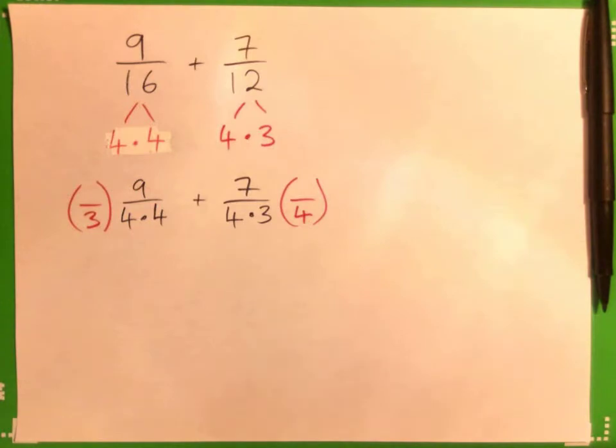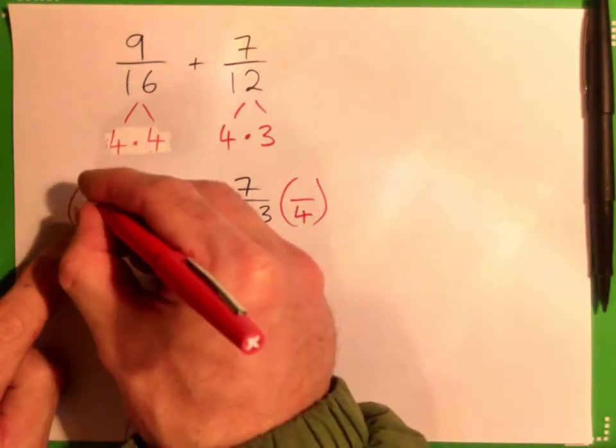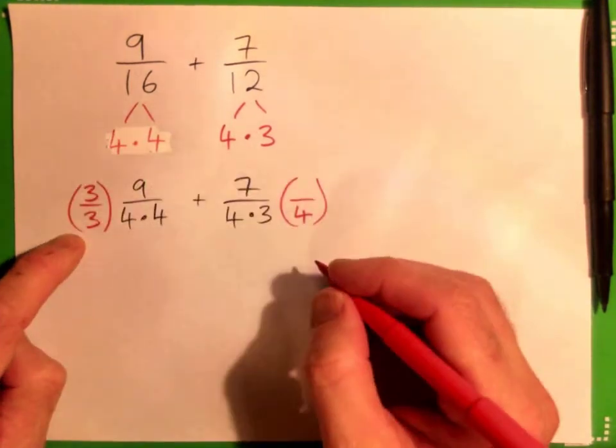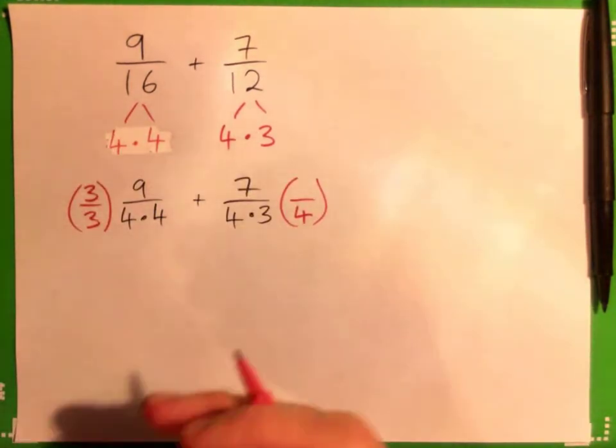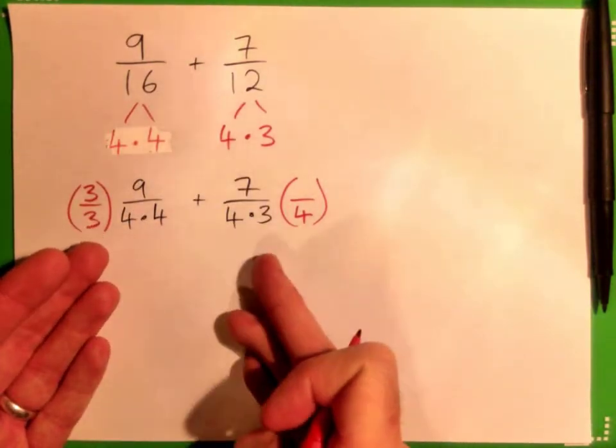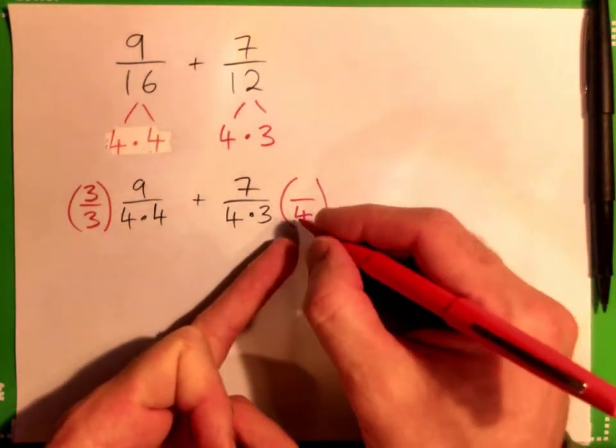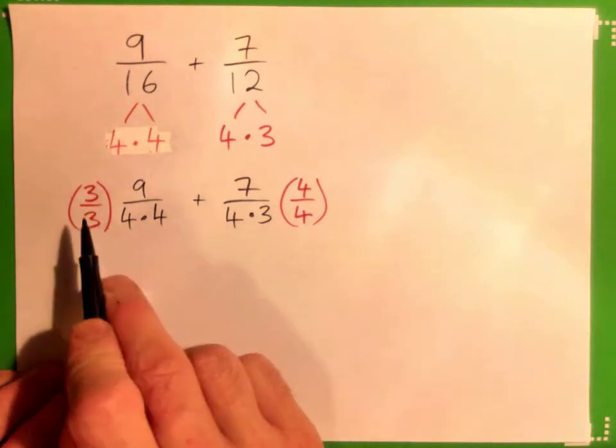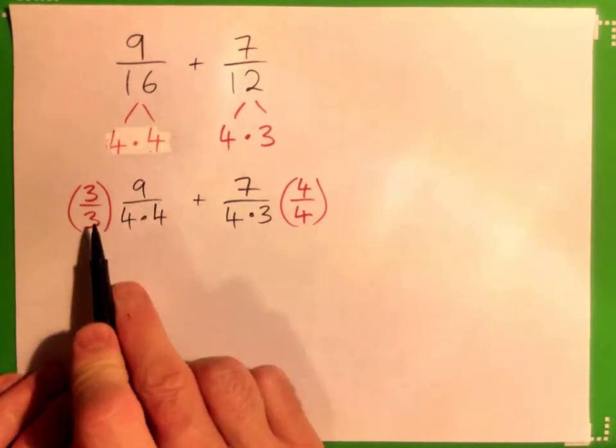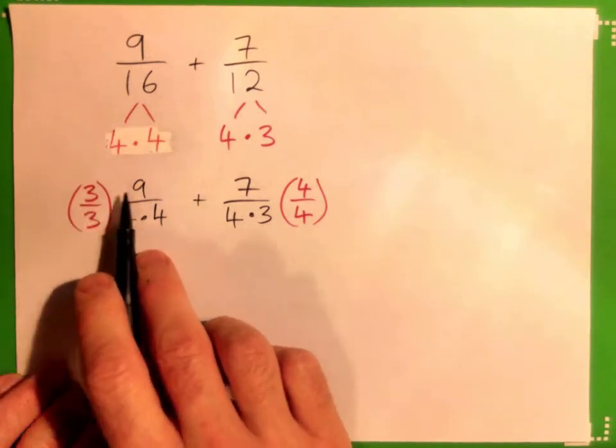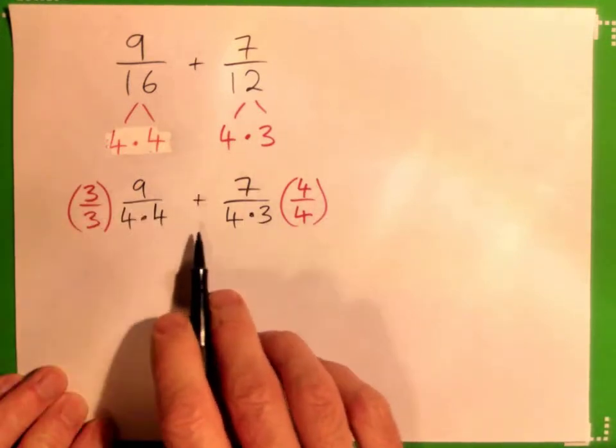And if I multiply the bottom here by 3, I must multiply the top by 3. So multiply this by a unit fraction. It doesn't change the value of 9 sixteenths, but it'll change what it looks like. Similarly, over here, you multiply the bottom by 4, must multiply the top also by 4. So we get 3 times 9 over 3 times 4 times 4. Let's go ahead and just multiply everything out at this point.